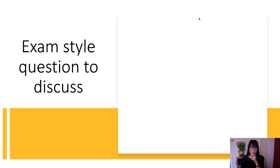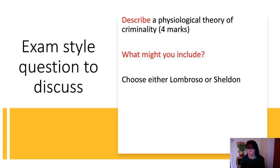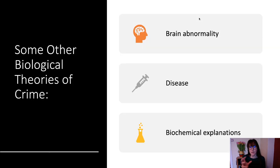An exam-style question: 'Describe a physiological theory of criminality.' You would choose either Lombroso or Sheldon — not both — and you do not need to evaluate. For four marks, define physiological, describe what the theorist found, and give an example.